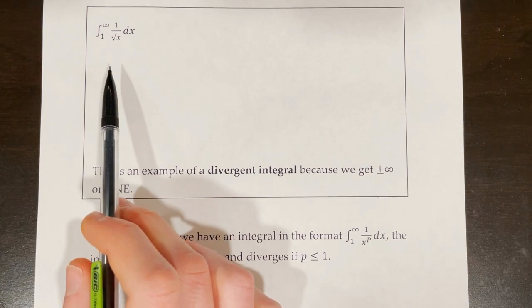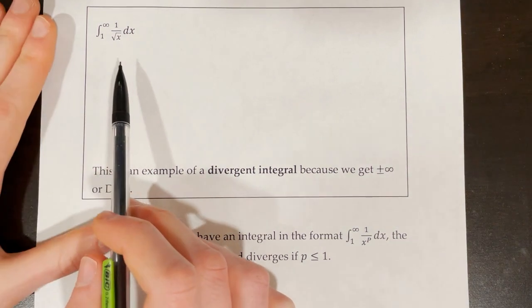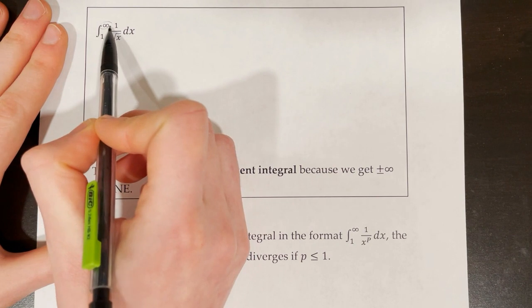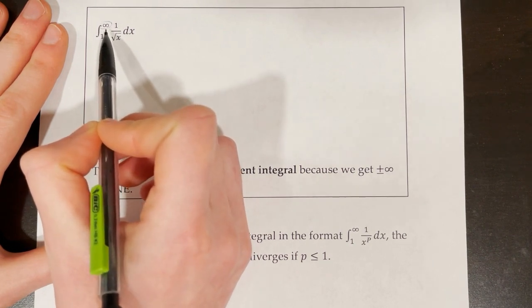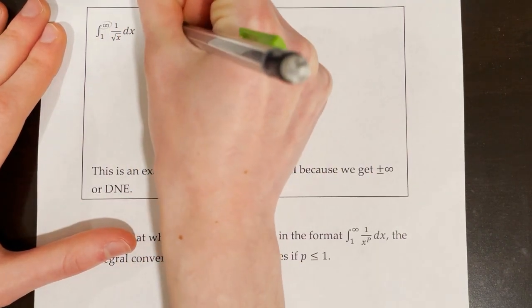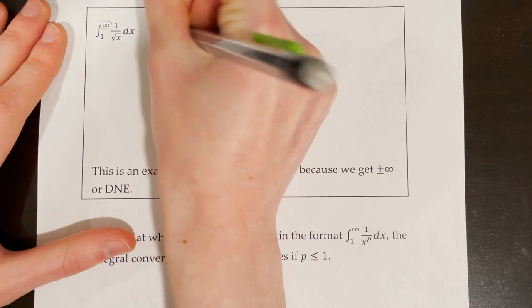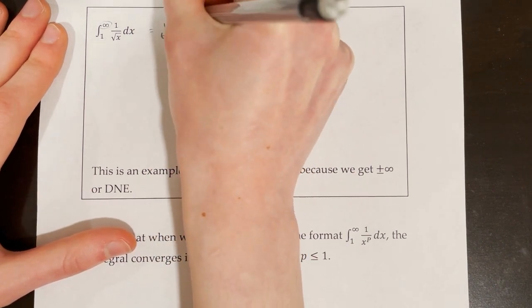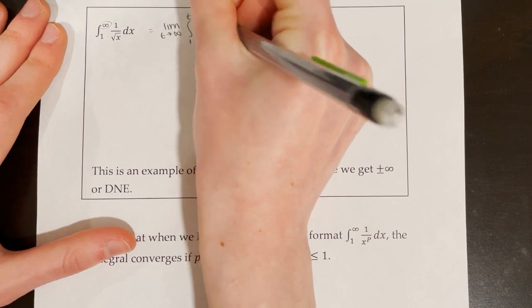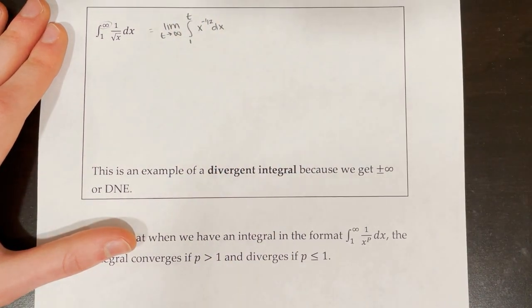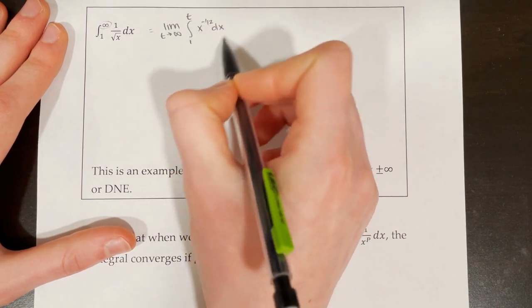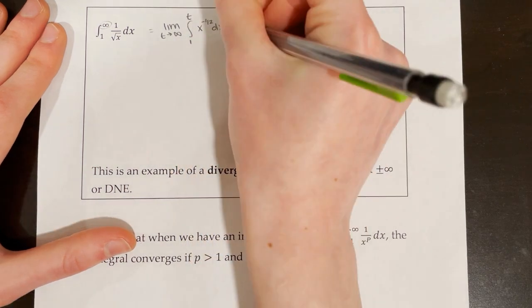Let's try another example: the integral from 1 to infinity of 1 over radical x dx. The first thing I'm going to do is identify my problem, replace that with a variable, and put a limit on the front. I see that my problem here is infinity — I can't integrate up until infinity because infinity is not an actual number I can plug in. So I'm going to rewrite this as the limit as t approaches infinity of the integral from 1 to t, and rewrite 1 over rad x as x to the power of negative 1 half dx to make it easier to integrate.